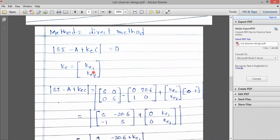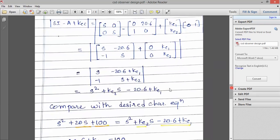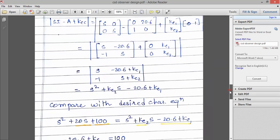KE, we have to assume KE1 and KE2. And after substitution of all values, this is the matrix we calculated and get the determinant equation. This is the equation containing the KE2 and KE1 variable. Now, using desired characteristic equation, again we get S square plus 20S plus 100.